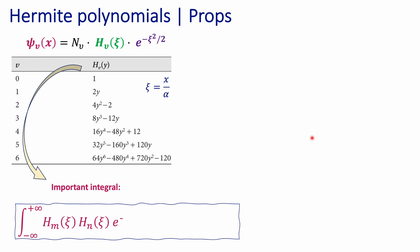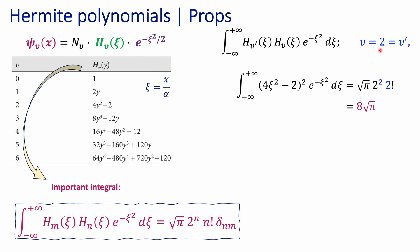Another important property is the integral that defines orthonormality. Let's do one example. If both indices are equal to 2, you are effectively doing the calculation for the Hermite polynomial of degree 2. After integration, since the indices are the same, the Kronecker delta equals 1, and you end up with the square root of pi times 2 to the power of the index, which is 2, times the index factorial, which is 2 factorial. When you do this calculation, you end up with 8 times the square root of pi. I want to stress that if you are following the Atkins textbook, they use the variable y, whereas I'm using the reduced variable chi — these two are the same, just different labels. I use chi to avoid confusion with the y-axis, since chi is a reduced variable related to the axis of vibration, not a Cartesian coordinate.